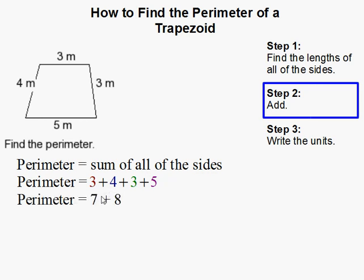That gives us 3 plus 4 is 7, 3 plus 5 is 8. If we add that up, we get 15.